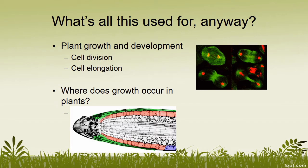So what does the plant use respiration for? It's for plant growth and development. The cells divide, the cells elongate, and then the cells differentiate between different types of cells that are in a plant. The picture here is of a root tip, and as the root grows and stretches, the cells divide, it creates more cells, the cells differentiate between the different parts of the root, and then the root elongates.